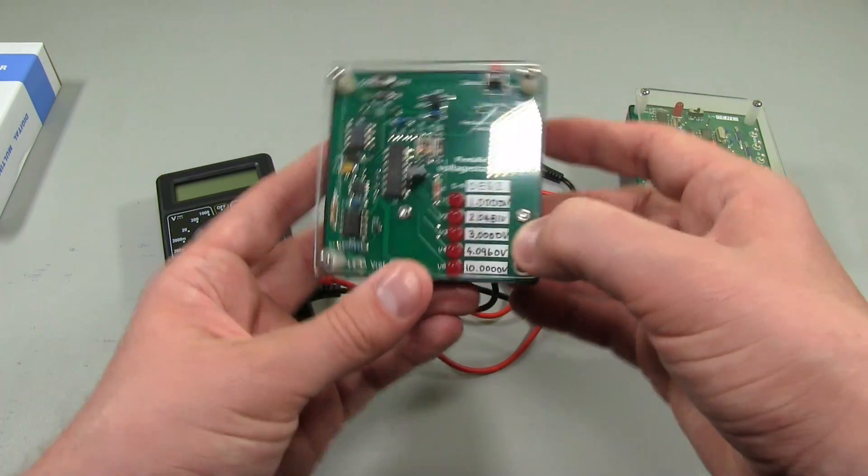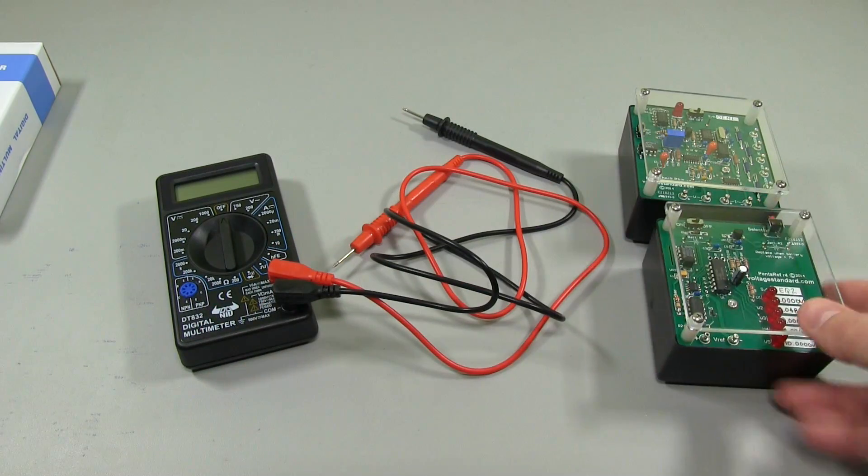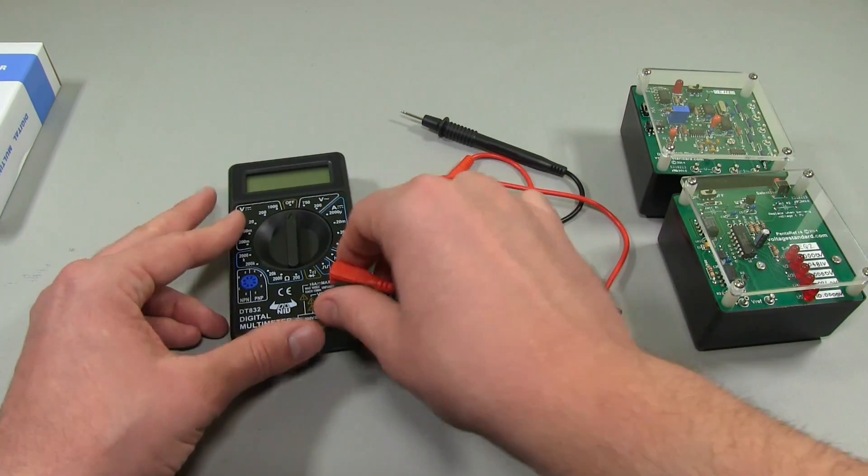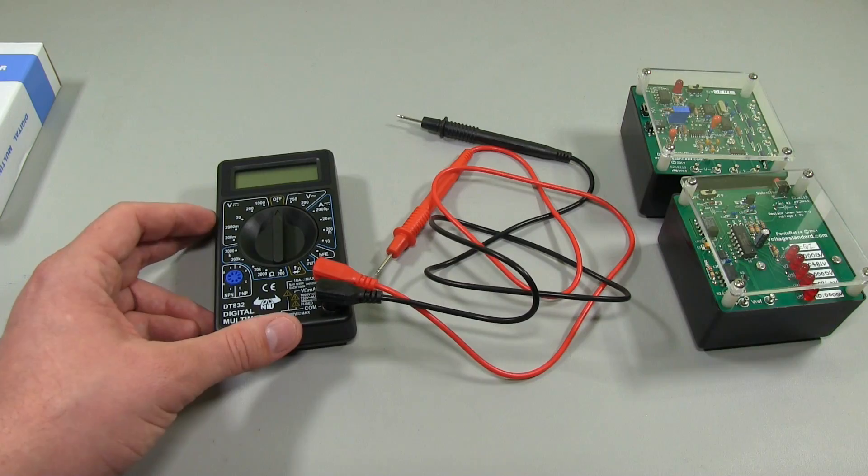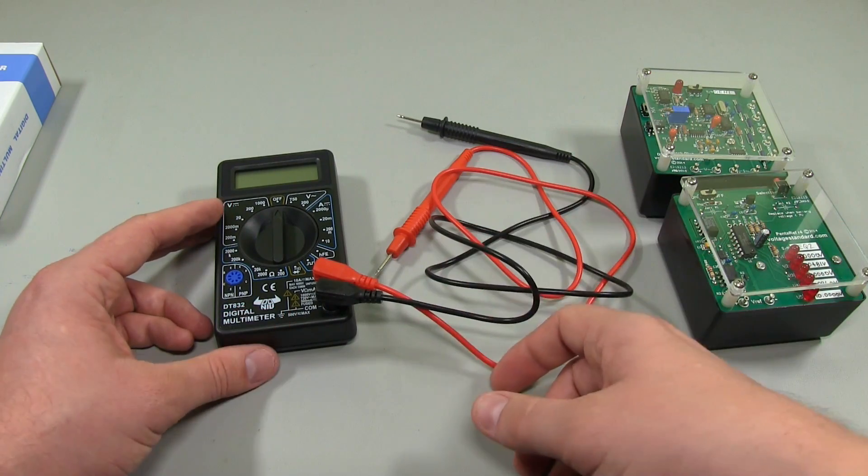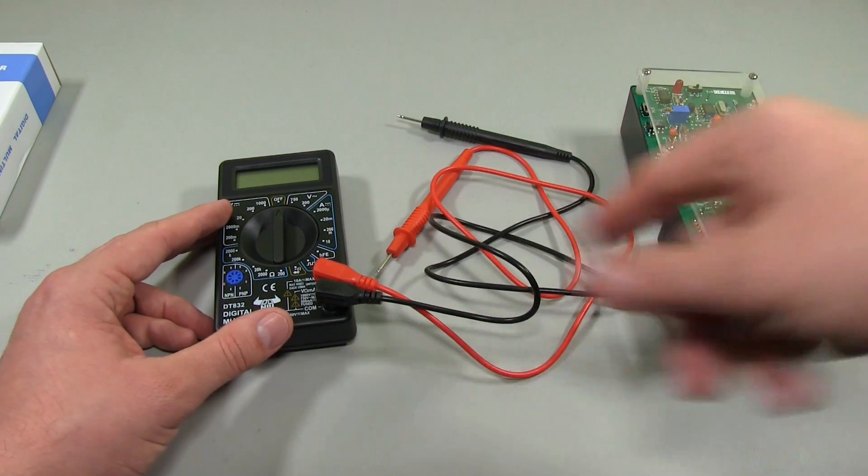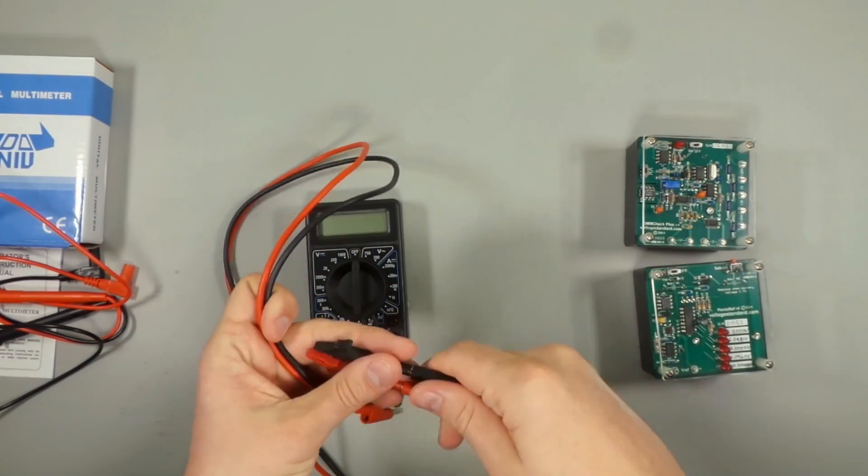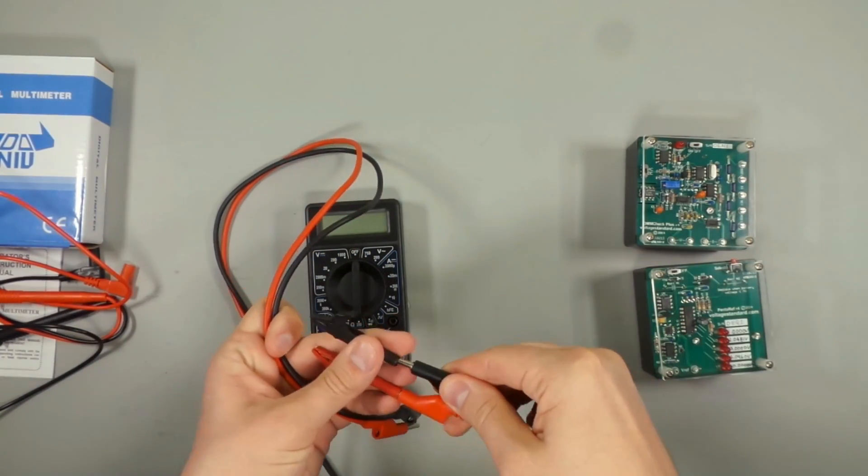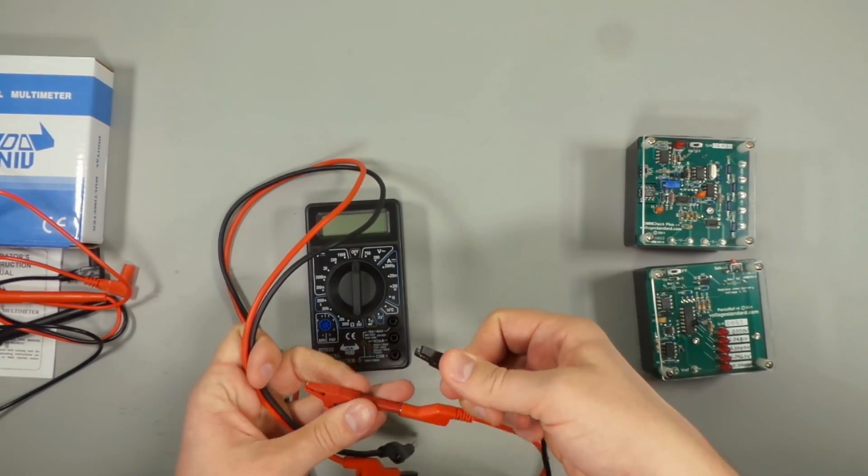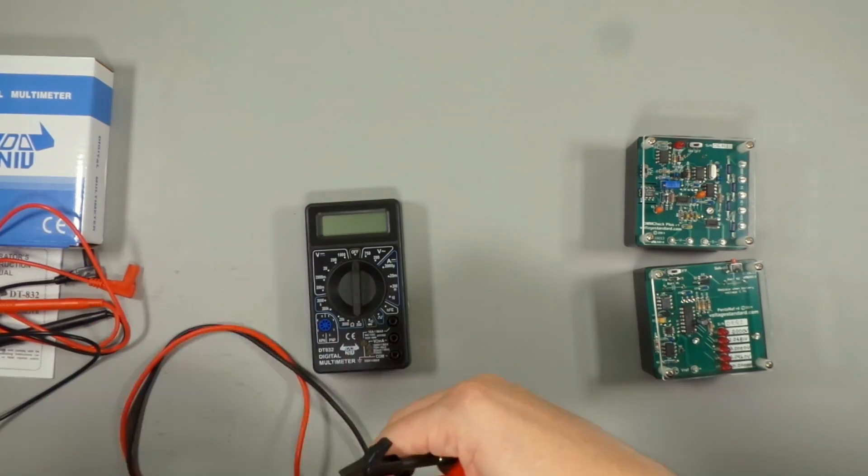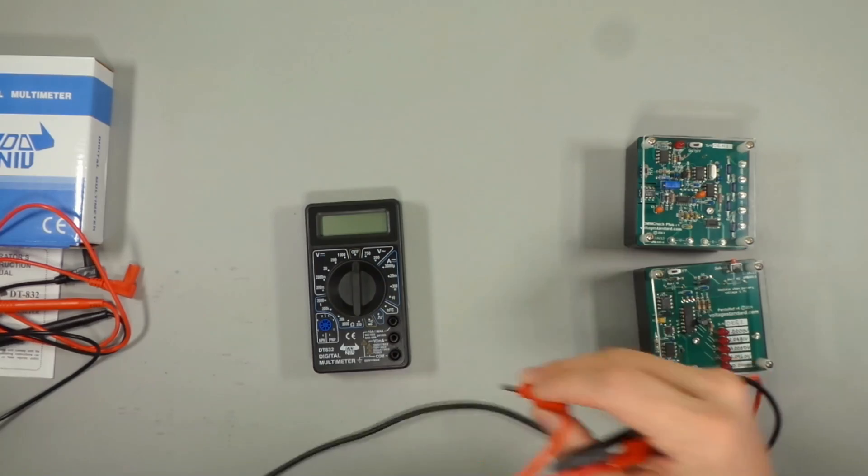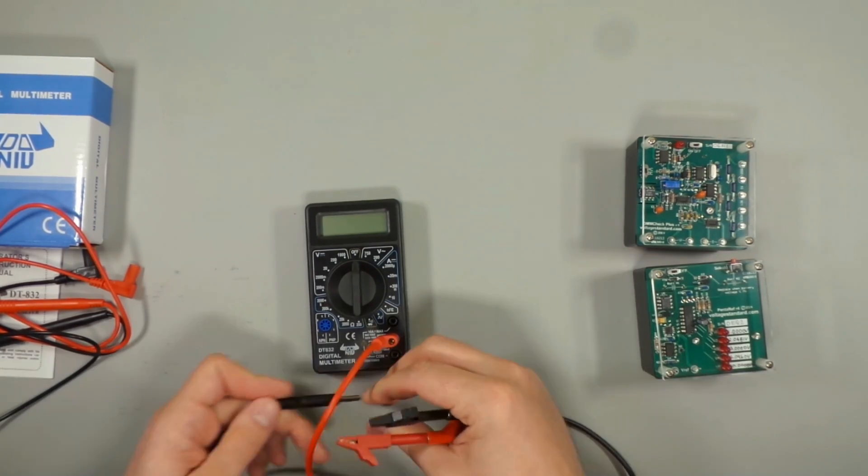What I might do though is actually get rid of these leads and use something a little bit more convenient. I've got some leads with some alligator clips, so I'll swap those over now and then we'll plug this in and do some testing. You can see the leads I'm going to test with are just banana leads like this, and they've got some of these little alligator clips on the end so we can plug those directly into this meter.